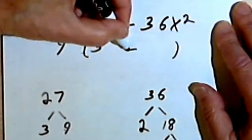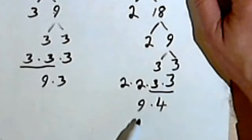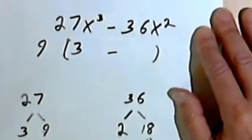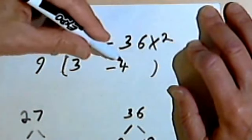Doing the same thing with the negative 36, the common factor was 9. I know I've got a negative here, and 36 was 9 times 4, so I'll put in my negative 4. And now I've got my coefficients taken care of.